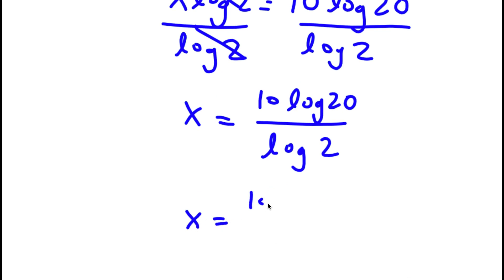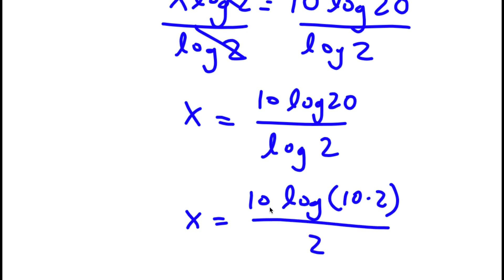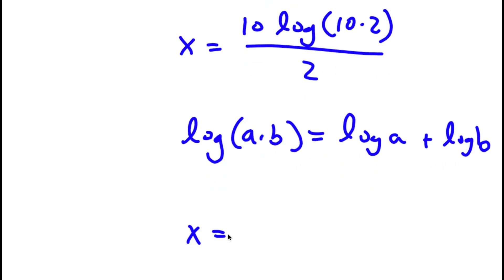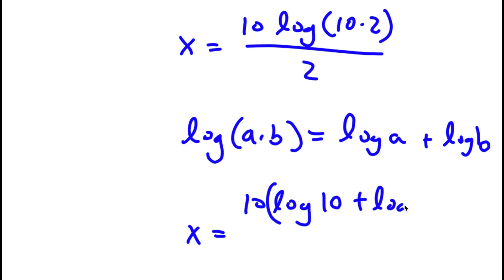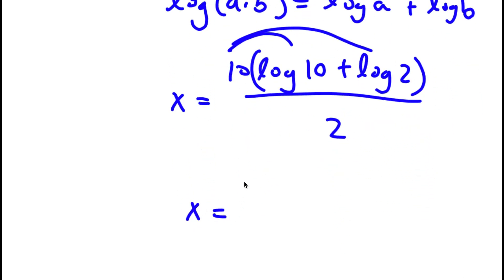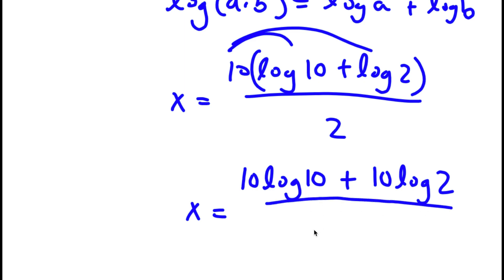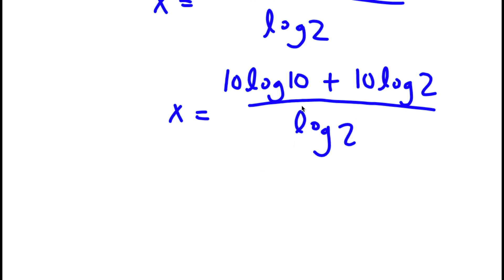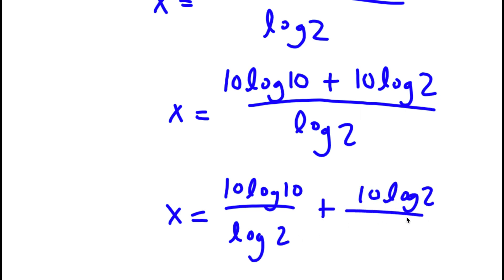Now, log 20 — I'm going to rewrite that as log of (10 times 2). And if I have something in the form log (a times b), that's simply equal to log a plus log b. So log of (10 times 2) equals log 10 plus log 2. I have this over log 2. Now if I distribute the 10, I get 10 times log 10 plus 10 times log 2, all over log 2.